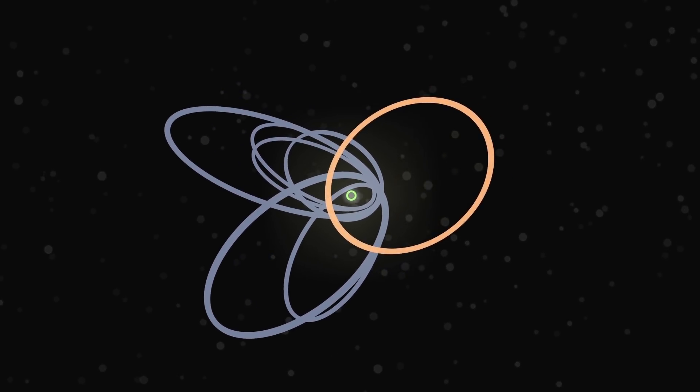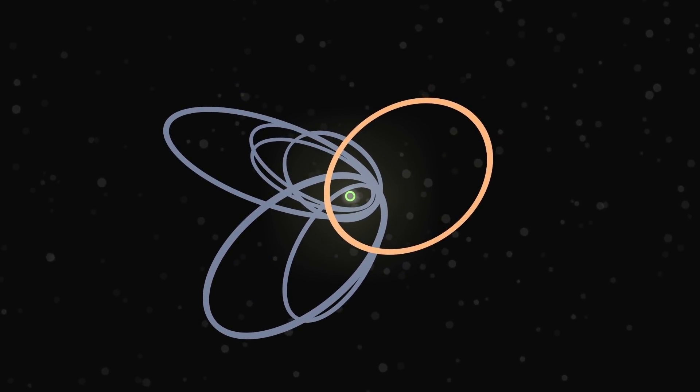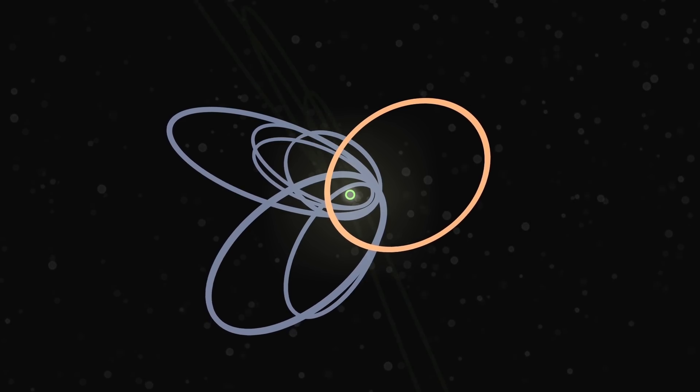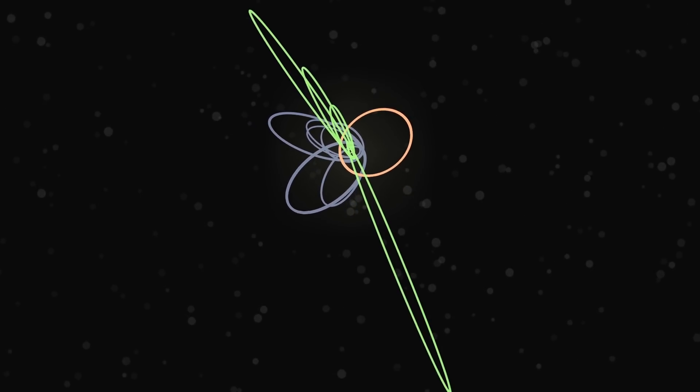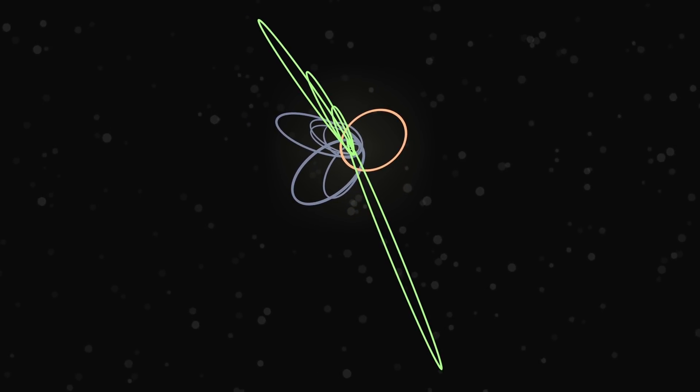The original researchers also predicted that planet 9's gravity would cause another set of Kuiper Belt objects to be forced into orbits perpendicular to planet 9's orbit. Since that prediction was made, five such objects have already been discovered that perfectly match the description.